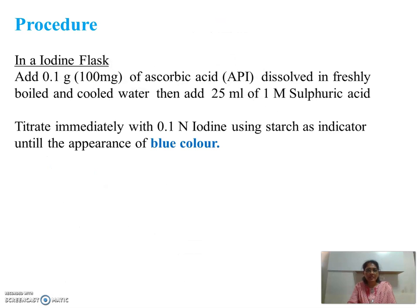Let's see the procedure. In the iodine flask, take 0.1 gram of ascorbic acid (API), which must be dissolved in freshly boiled and cooled water. Immediately add 25 ml of 1 molar sulfuric acid, and then titrate immediately with 0.1N iodine solution using starch as an indicator until a permanent blue color appears.